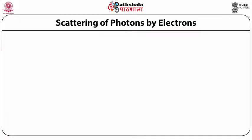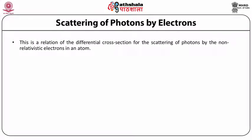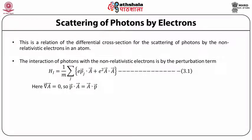Scattering of photons by electrons. This is the relation for the differential cross section for the scattering of photons by non-relativistic electrons in an atom. The interaction of photons with non-relativistic electrons is given by the perturbation term H1 = (1/m) sum over j [e · p_j · A + e² · A · A], where del·A = 0, so p·A = A·p.